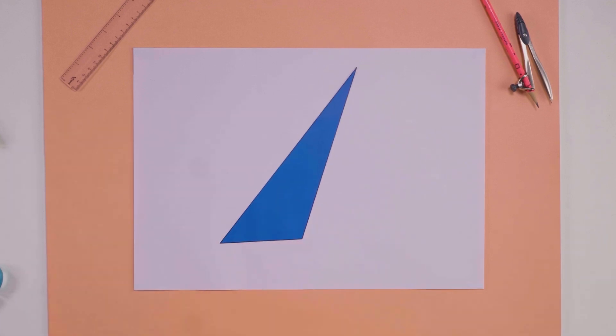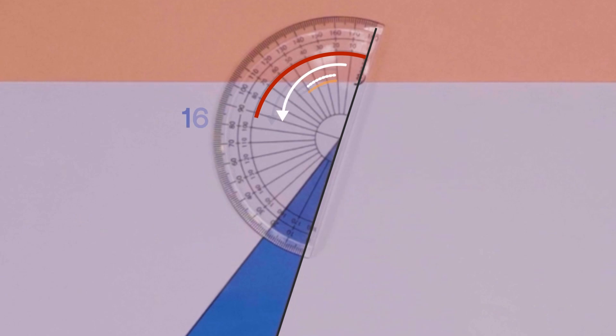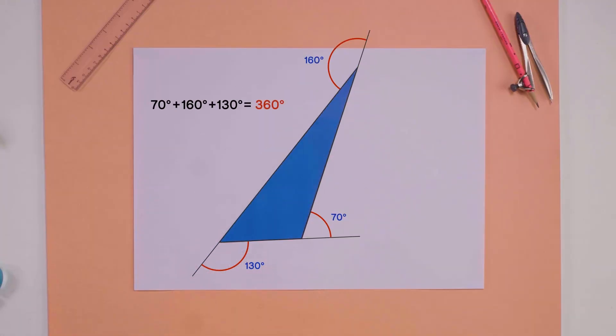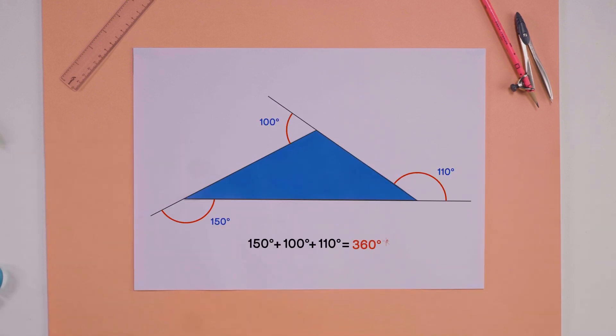Let's try for another triangle. 70 degrees, 160 degrees, 130 degrees. Again, they add up to 360 degrees. And one more. 360 degrees again.